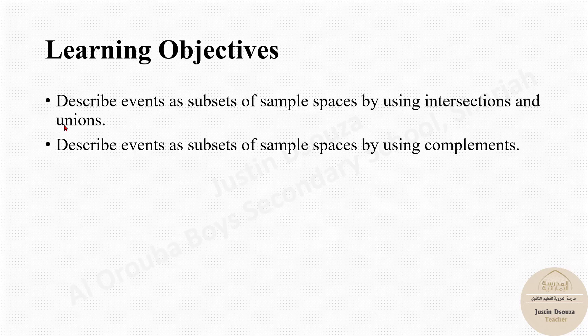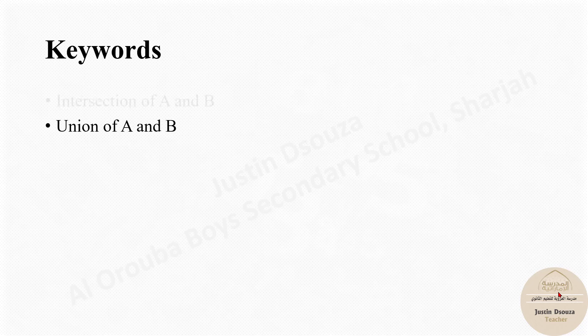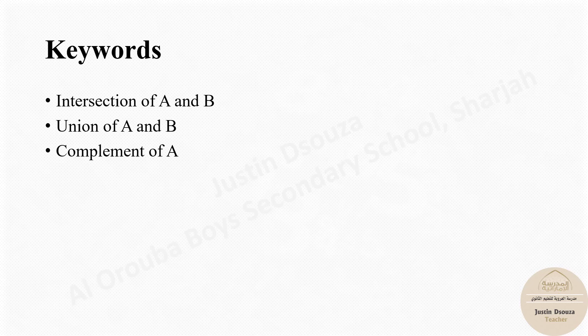This lesson is mainly about intersection, union, and complements — we will look into all three types. The keywords are intersection of A and B, union of A and B, and complement of A or complement of B.